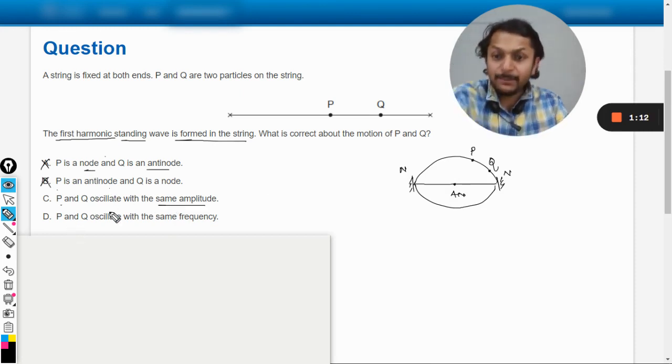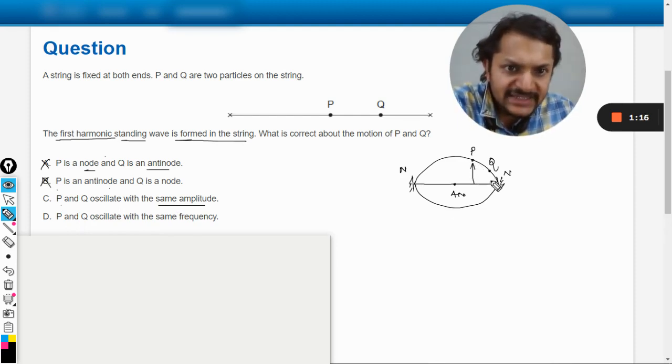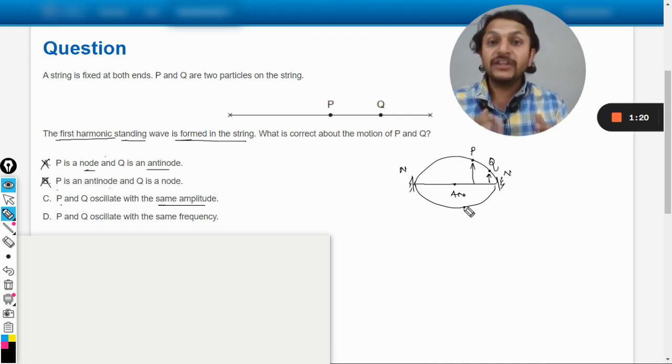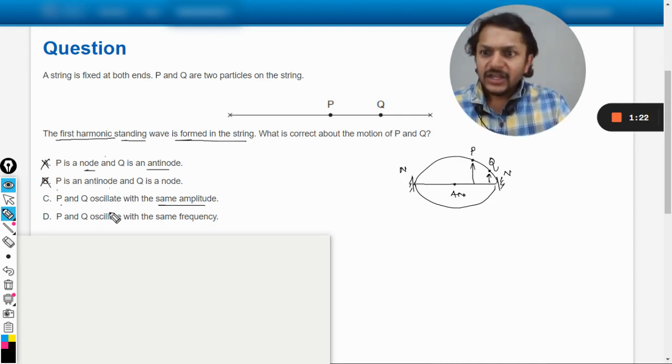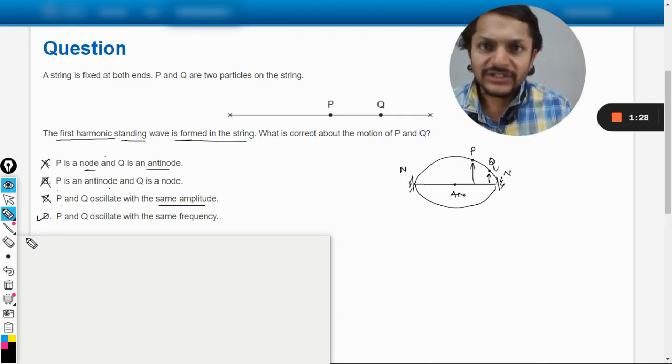Option C: P and Q oscillate with the same amplitude. Well, again not. You see the amplitude at P is more than the amplitude at Q, clearly. So the amplitude will not be the same, it will be different. Now obviously if C is wrong, D is the correct answer.